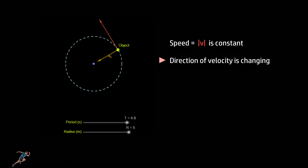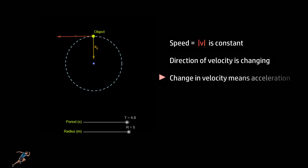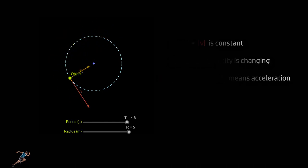And we know that if there is a change in velocity, there is acceleration. And that in a way sets conditions for circular motion.